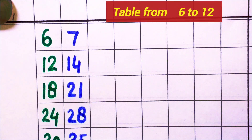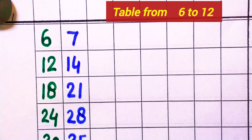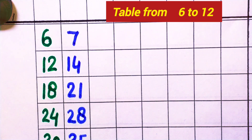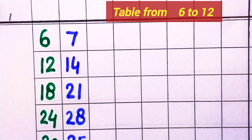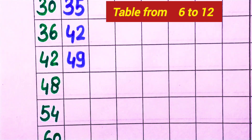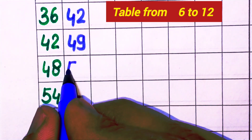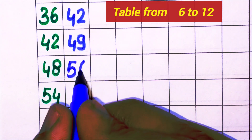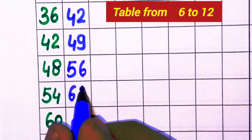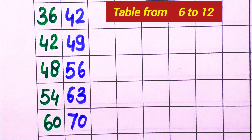7 × 6 = 42, 7 × 7 = 49, 7 × 8 = 56, 7 × 9 = 63, 7 × 10 = 70. Next: 8.